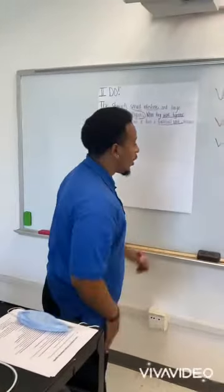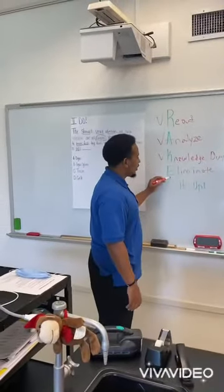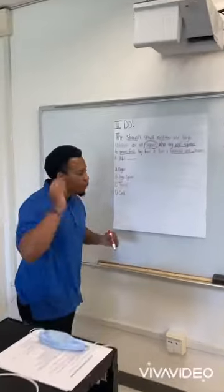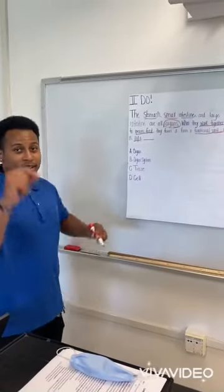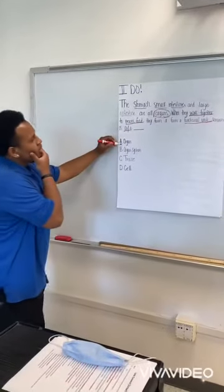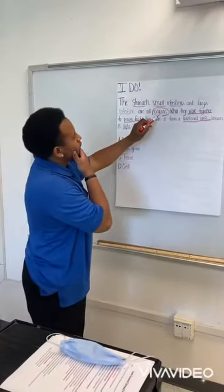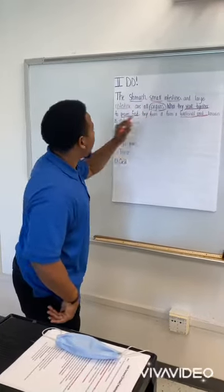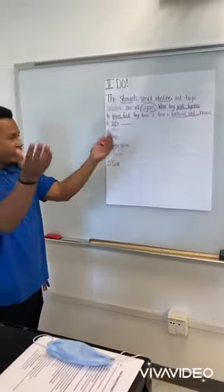Now we're at the last part of the RAKE IT UP method — Eliminate. We're going to go to the multiple choice answers and see which makes sense and which don't. A says 'organ.' We already circled organs, so that can easily be eliminated because the stomach, small intestine, and large intestine are already organs. You can scratch that out.